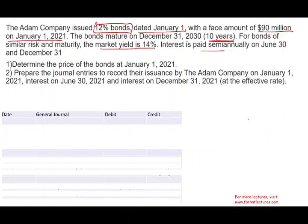Interest is paid semi-annually, which is important. It means rather than 10 years, we're going to have N equal to 20 — we have 20 periods because twice a year for 10 years is 20 periods. And the market rate, rather than 14%, when we go to the table we always use the market rate, so we're going to be using 7% to find the price of the bond. First, they want us to determine the price of the bond, and this is where your knowledge of the time value of money comes into place.